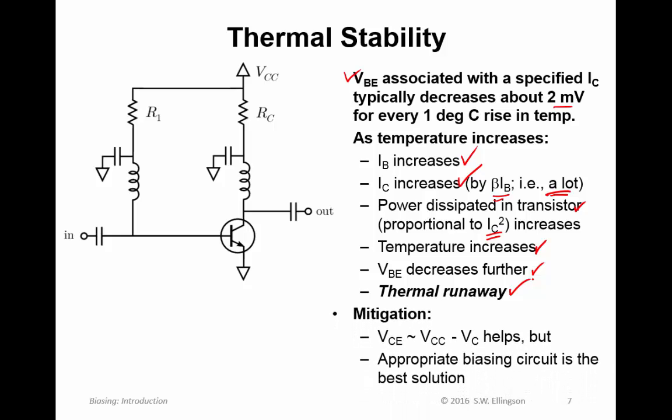So how do we mitigate this? A good idea is to make VCE roughly equal to VCC minus VC. So here's that difference, and it's a good idea to make that equal to this drop. Now, that only helps. It doesn't eliminate the problem. The way to eliminate the problem is to choose an appropriate biasing circuit, and that is not fixed biasing.